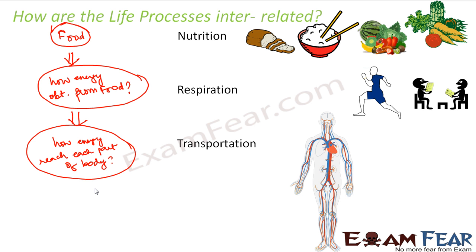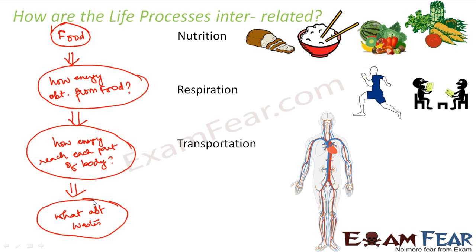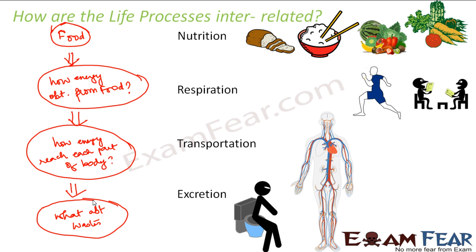Now the energy and all the nutrients have reached each and every corner of the body. What about the wastes? By the time so many things have taken place, there was a lot of waste production as well. When food gets digested and converted into simpler substances, during those chemical reactions a lot of waste materials or harmful substances are also produced. We just cannot keep accumulating wastes inside our body. So those waste products and useless byproducts formed during the process of energy generation need to be removed from the body. The process of removal of such waste products is known as excretion. Now you understand how nutrition, respiration, transportation, and excretion are related to each other. In this lesson, we will talk about these four life processes in detail one by one.